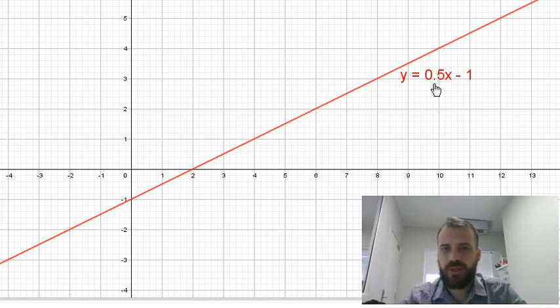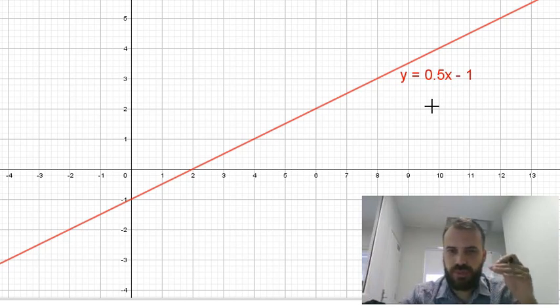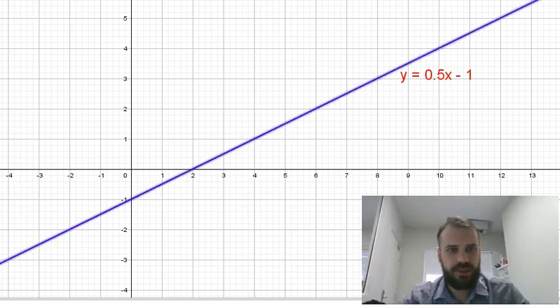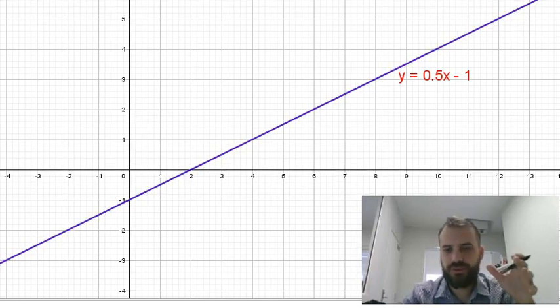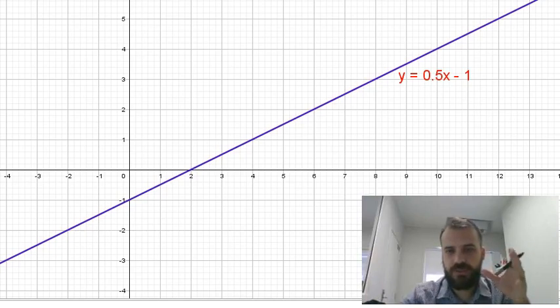Here's one line, y equals 0.5x minus 1. Now I'm going to draw another line that's parallel to that, running along like train tracks. So here's my second line. Now I've just drawn that line over the top of the first one. Let's move it over a little bit.